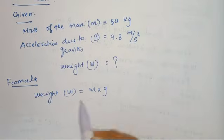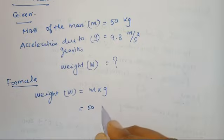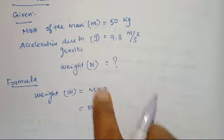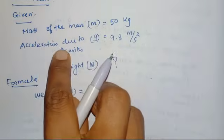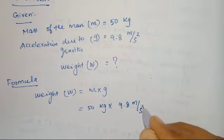Then I can substitute the value. M value we know. Direct substitution: 50 kg into g, gravity, acceleration due to gravity. That is earth gravity, 9.8 meter per second square.